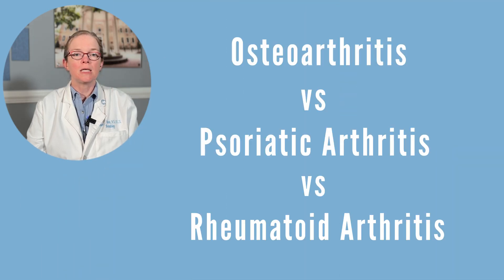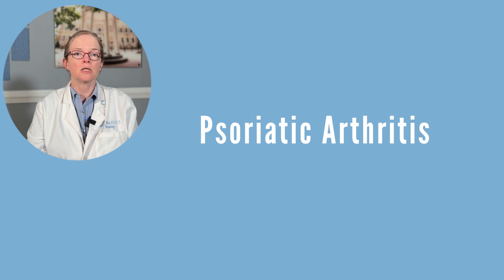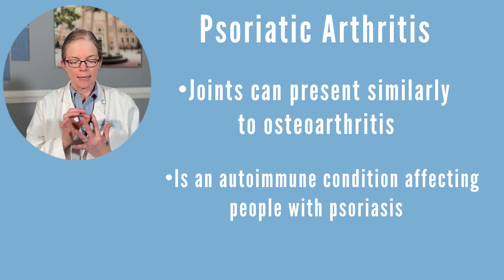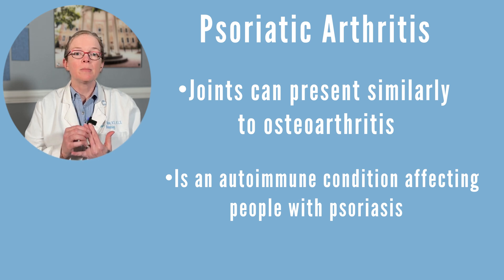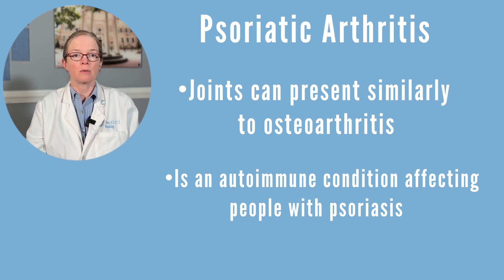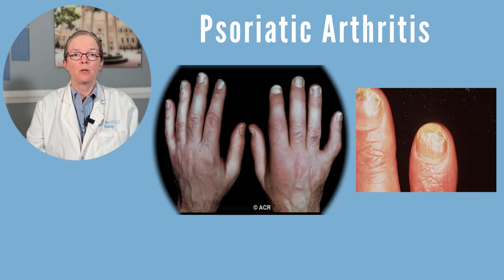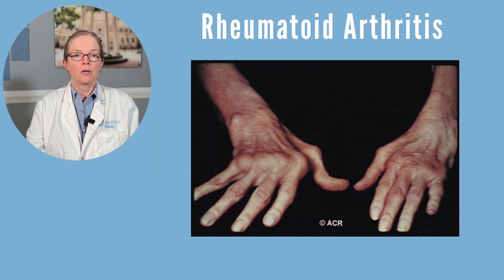One of the important things to distinguish from osteoarthritis are these other forms of inflammatory arthritis, particularly psoriatic arthritis. The joints in your hand can be affected in a similar way with psoriatic arthritis as with osteoarthritis, but differently than from rheumatoid arthritis. In psoriatic arthritis, we often think of skin or nail changes accompanying the hand pain. And in rheumatoid arthritis, we often see the larger knuckles involved rather than the smaller knuckles of the fingers. So there are clear ways to determine the patterns and significance of these other findings. But again, the most common form of arthritis in the hands is osteoarthritis.